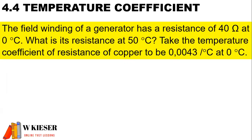In this example, the field winding of a generator has a resistance of 40 ohms at 0 degrees Celsius. What is its resistance at 50 degrees Celsius? Take the temperature coefficient of resistance of copper to be 0.0043.